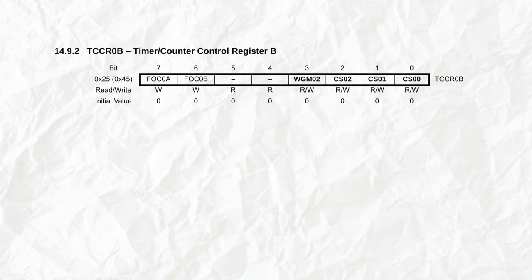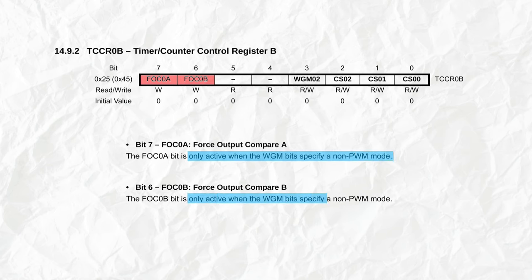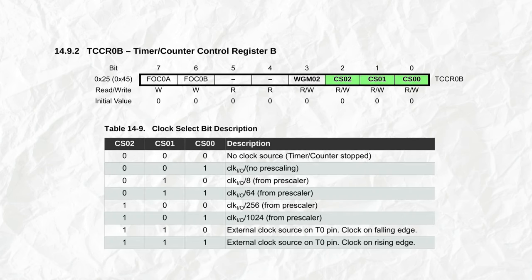For the timer counter control register B, we can ignore the force output compare bits because these apply to non PWM modes. So all that's left are the three clock select bits in this register. So basically we just get to choose how slowly our timer counts.